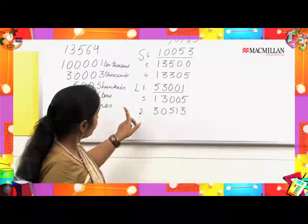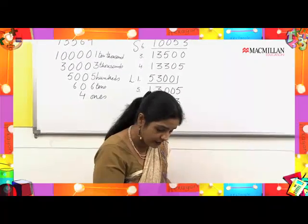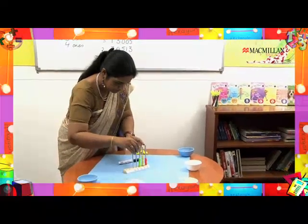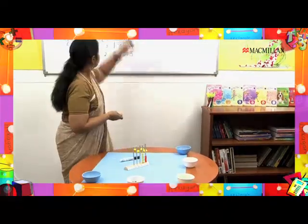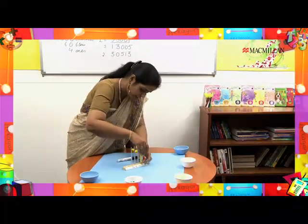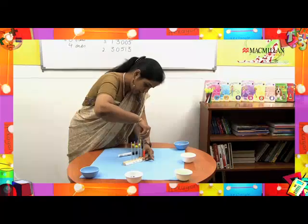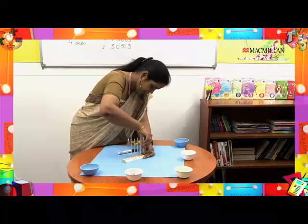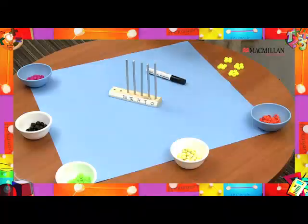Interesting, isn't it? Now let us move a little further and try to create our own numbers. I have 18 beads here. Just as we used those four digits to create numbers, now using these 18 beads I am going to create a number on my abacus, with the restriction that each rod — each place value — will have a different number of beads.